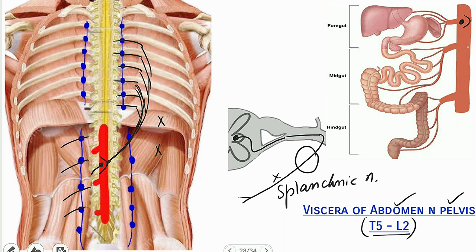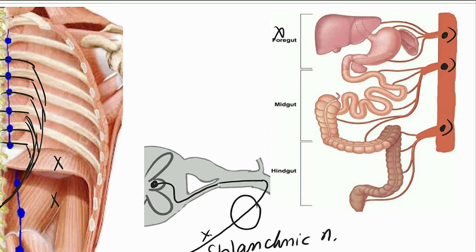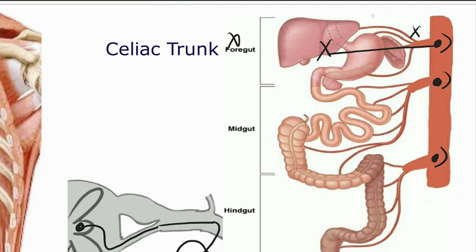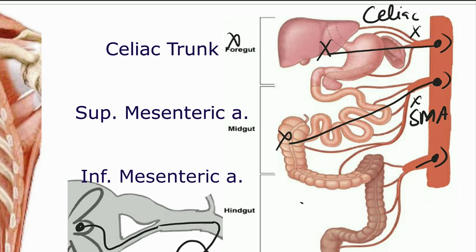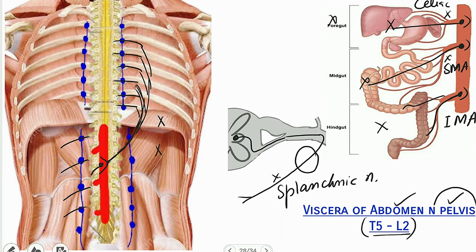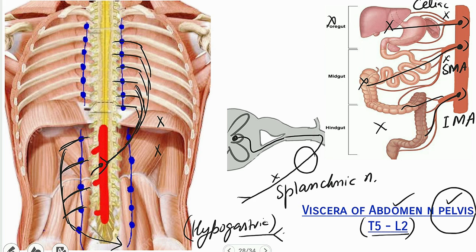The thoracic splanchnic nerves exit the thorax, cross the diaphragm, and reach in front of the vertebra where the abdominal aorta is located. Here the splanchnic nerves — the pre-ganglionic neurons — synapse with the post-ganglionic neurons forming the pre-vertebral ganglia (collateral ganglia). Post-ganglionic neurons follow the arteries: fibers for the foregut follow the celiac trunk, for the midgut follow the superior mesenteric artery, and for the hindgut follow the inferior mesenteric artery. For pelvic viscera such as the uterus and bladder, splanchnic nerves from lumbar and sacral ganglia move to the pelvis and form the hypogastric plexus, where pre-ganglionic neurons synapse with post-ganglionic neurons that supply the pelvic viscera.